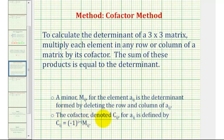The cofactor of each element is equal to negative one raised to the power of i plus j, where i is the row and j is the column of the given element, and m, the minor, is equal to the two by two determinant formed by eliminating the row and column of the given element.